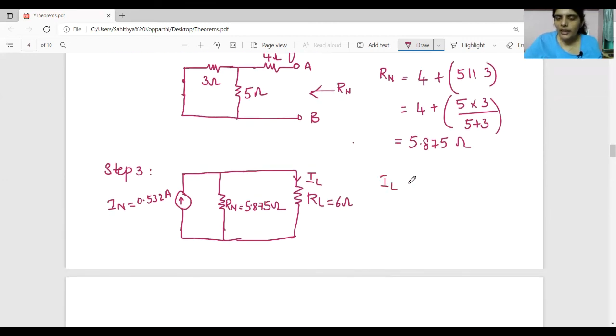So IL can be calculated by using current division rule. IL is nothing but IN into RN divided by RN plus RL. That is IN is 0.532 into 5.875 divided by 5.875 plus 6.